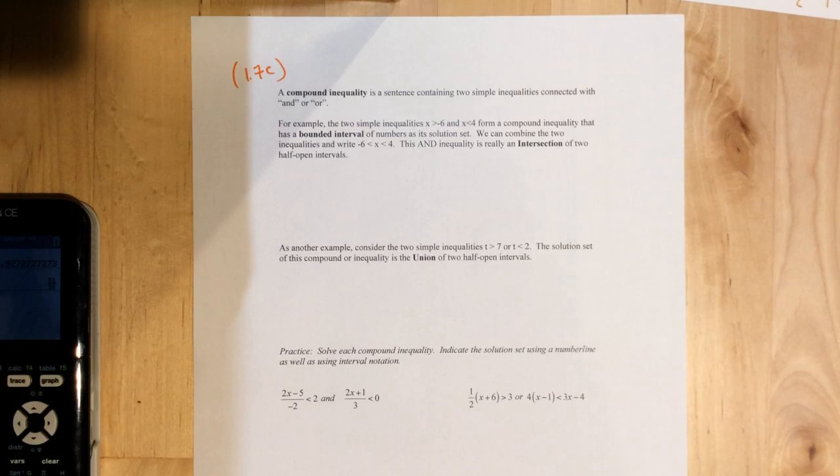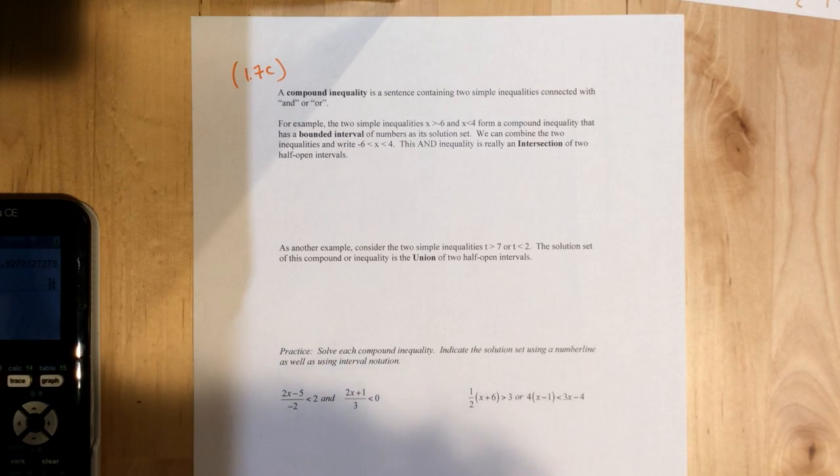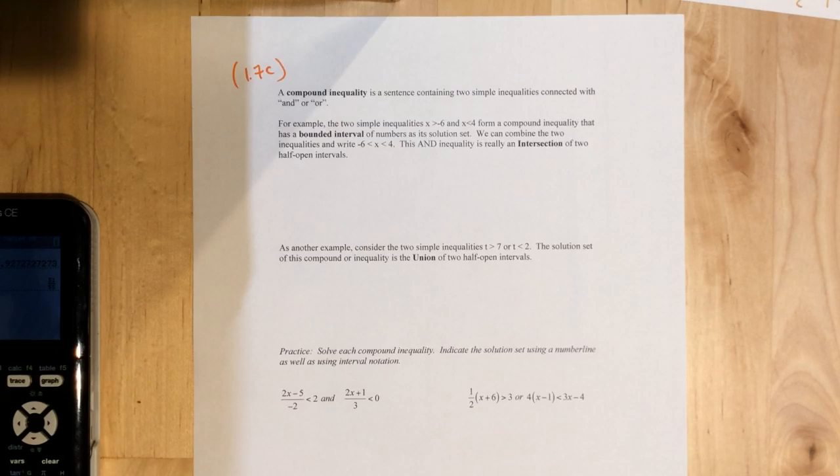As promised, we have compound inequalities. A compound inequality is a sentence containing two simple inequalities connected with and or or.